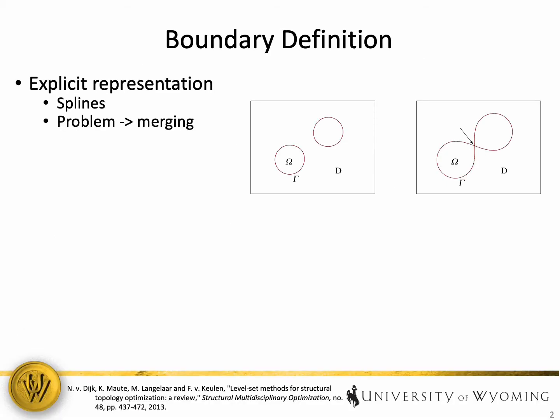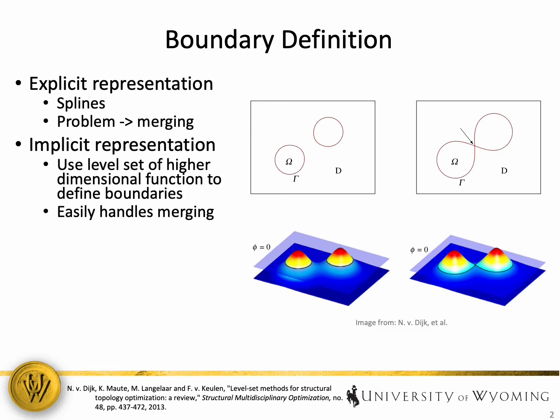An important feature of the level set method lies in how the boundaries are defined. An intuitive way to represent boundaries is by using explicitly defined splines. However, this representation can be problematic when two explicitly defined features merge together into a single feature. Therefore, the level set method represents the boundaries implicitly rather than explicitly by using a level set of a higher dimensional function to define the boundaries.